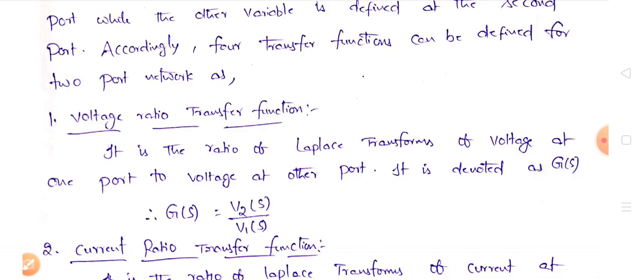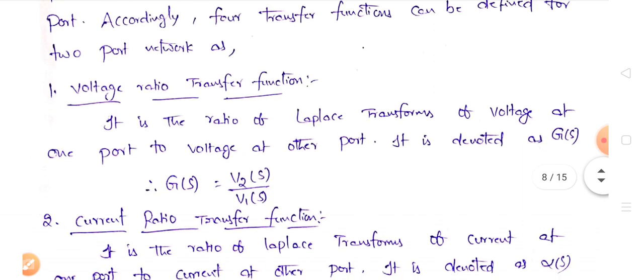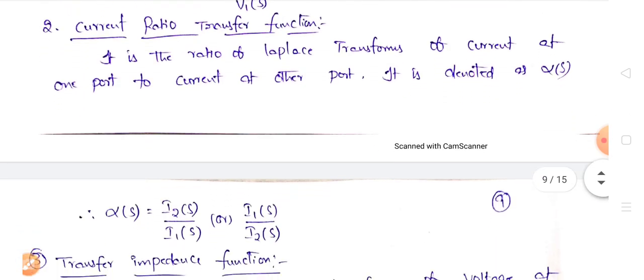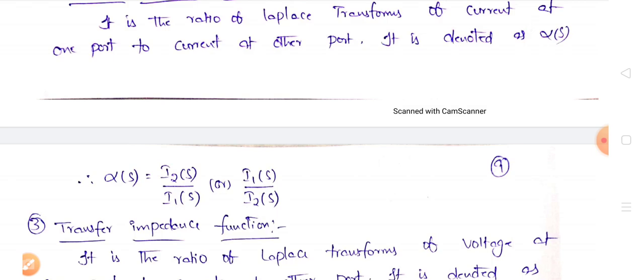The first type is the voltage ratio transfer function: the ratio of the Laplace transform of voltage at one port to the voltage at the other port. It is denoted G(S) = V2(S)/V1(S). Similarly, the current ratio transfer function is the ratio of the Laplace transform of current from one port to current at the other port, denoted α(S) = I2(S)/I1(S), or I1(S)/I2(S).